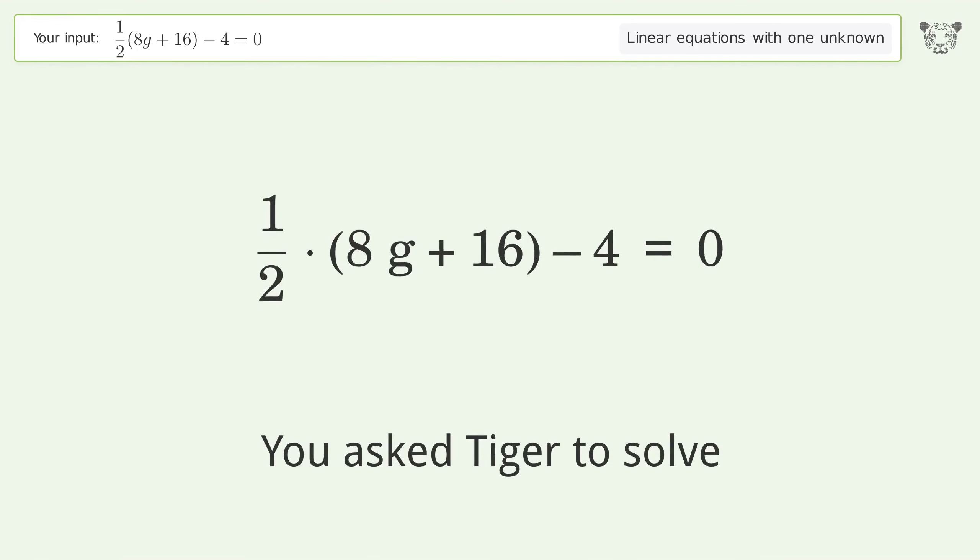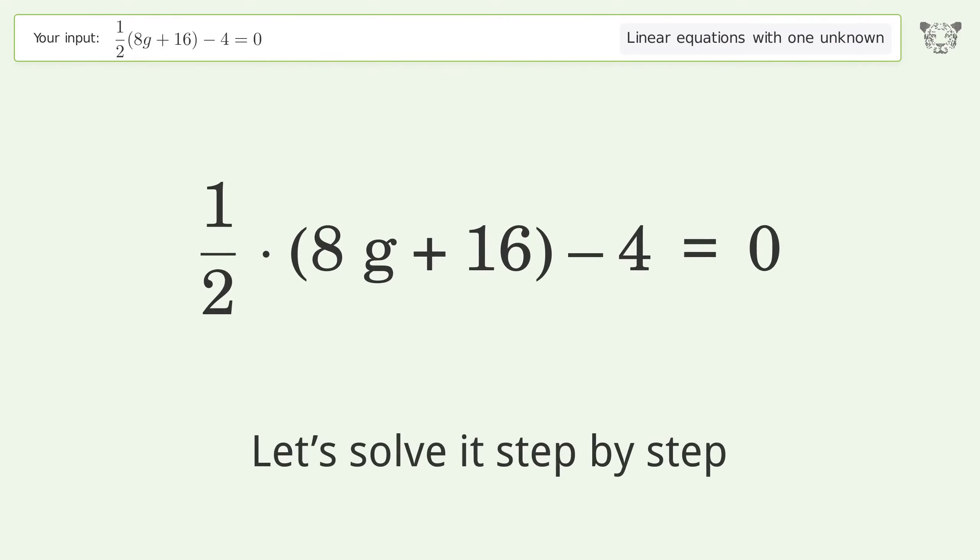You asked Tiger to solve this. It deals with linear equations with one unknown. The final result is g equals negative one. Let's solve it step by step. Simplify the expression.